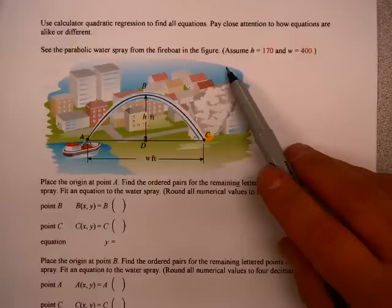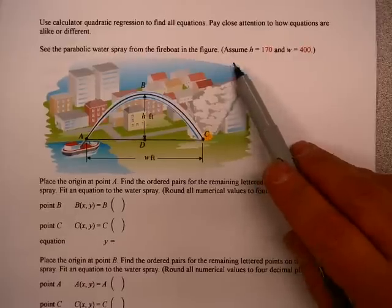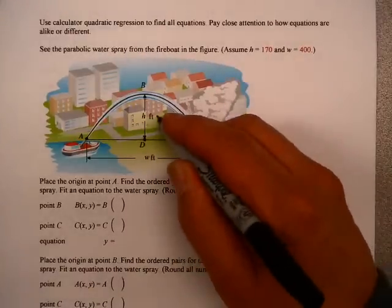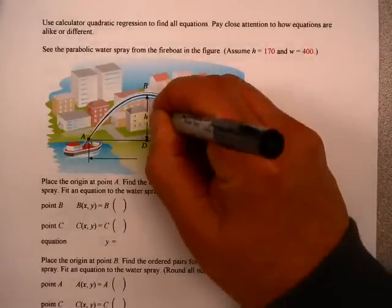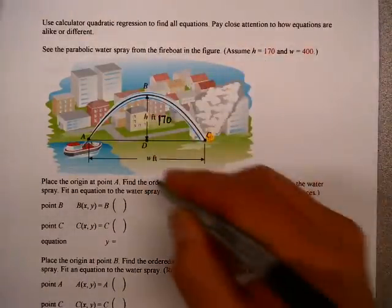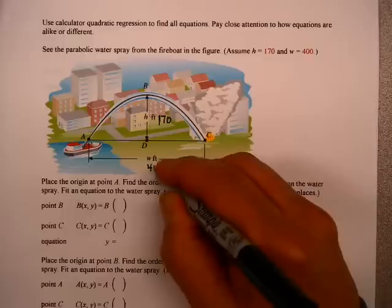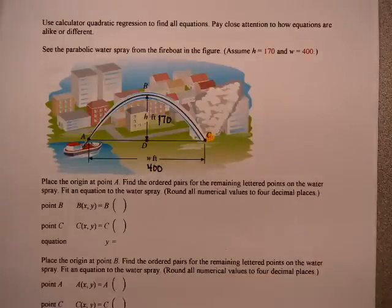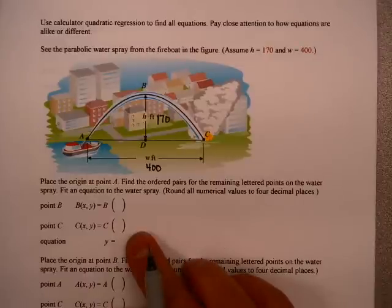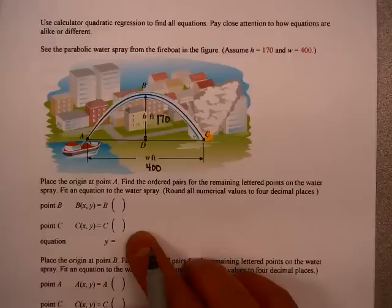See the parabolic water spray from the fireboat in figure. Assume that H here is 170 and that W is 400. First question, place the origin at A. Find the ordered pairs for the remaining lettered points of the water spray. Fit an equation to the water spray. Round all numerical values to four decimal places.